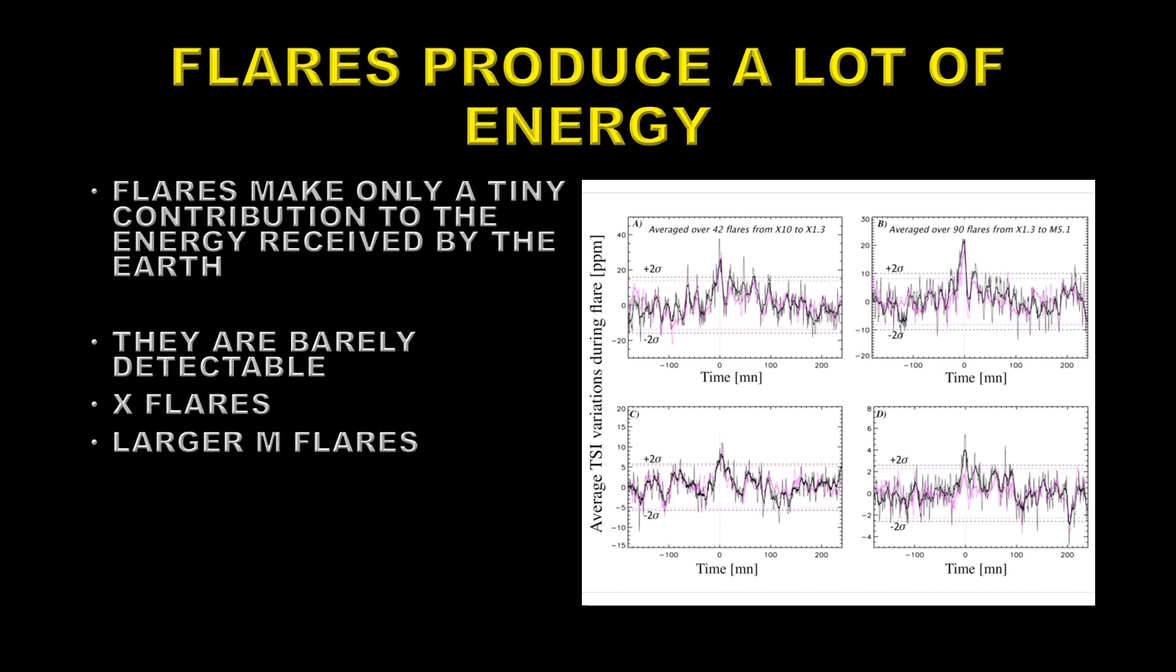B is a compendium of large M flares and some small X flares. You get quite a nice detection there, but it requires 90 of them to be able to get to that level of detection. If you take the smaller M flares, then it takes 267 of those to get a significant detection. And if you take C flares, you now need nearly 1500 of them to get a bare detection.